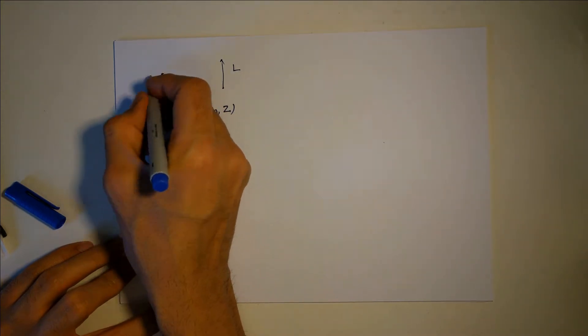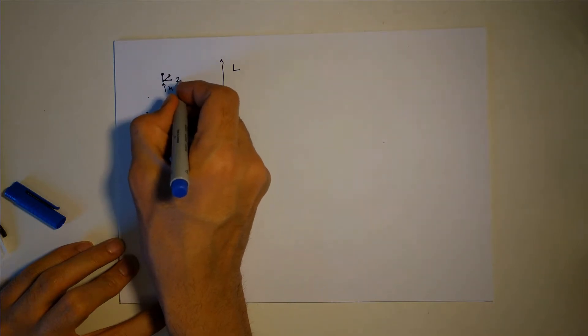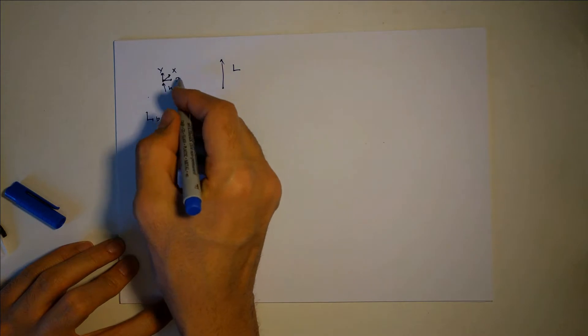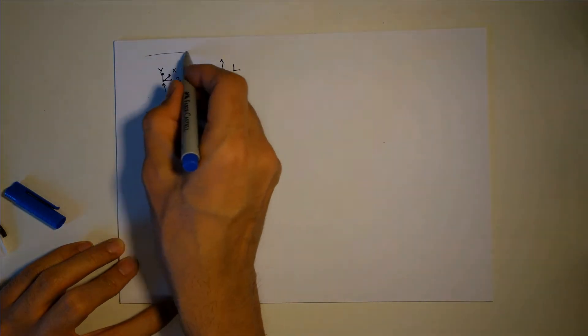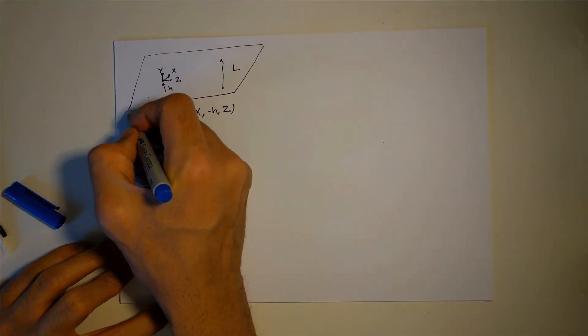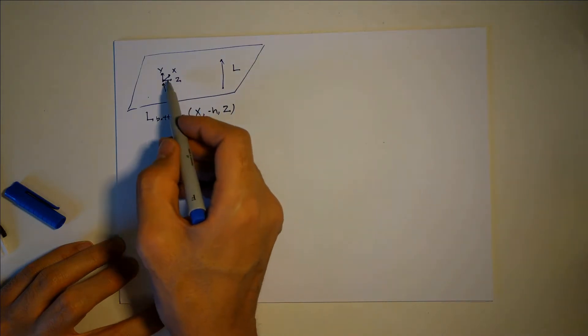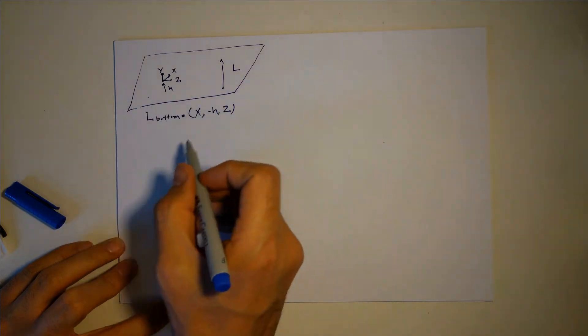This is my coordinate system: x, y, and z. So z is this way, x is this way, and y is up. And I can imagine that this plane x and z is parallel to this plane, so it's not tilted, they are perfectly parallel.